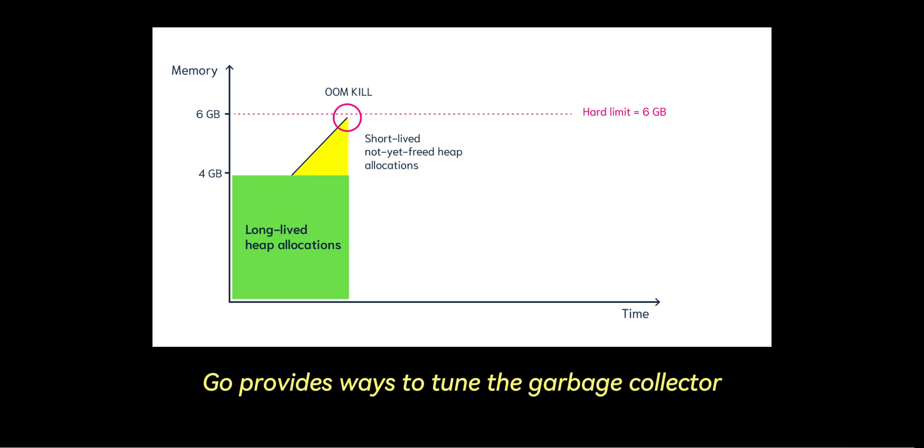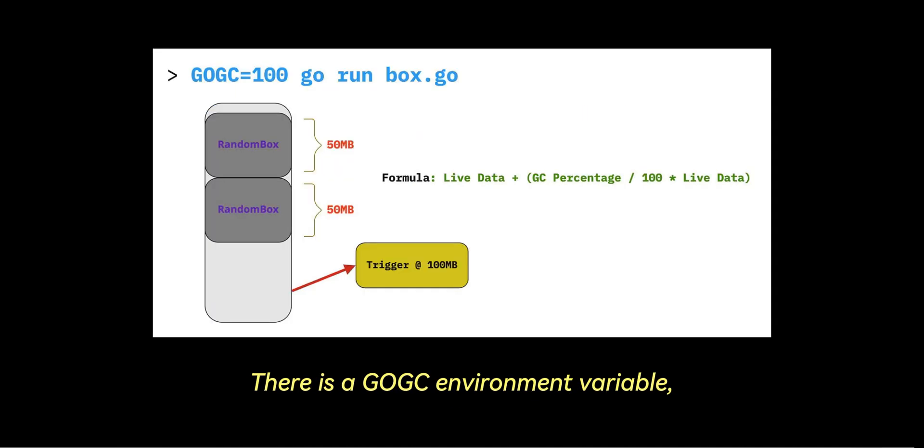Go provides ways to tune the garbage collector. There is a GOGC environment variable, which stands for Go Garbage Collector, and it sets the garbage collection target ratio. For instance, GOGC equals 100, which is the default, means that the garbage collector will trigger once the heap size grows by 100% since the last collection.